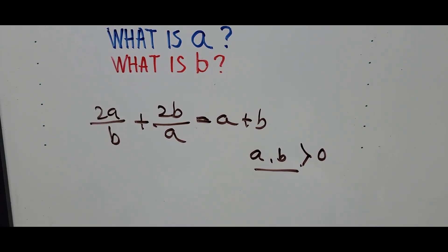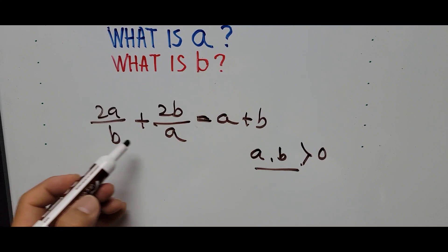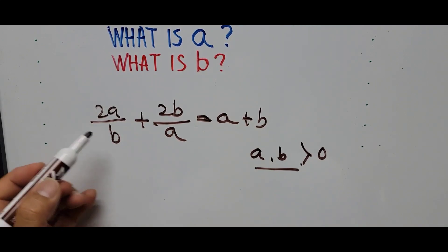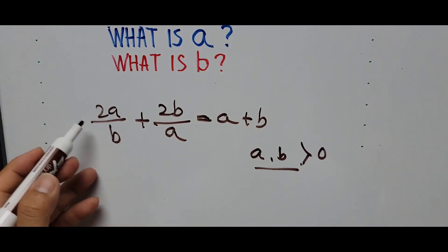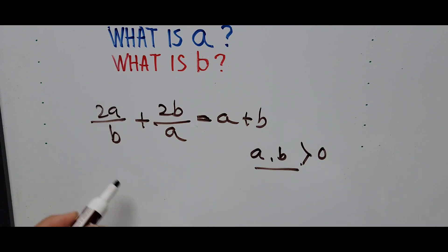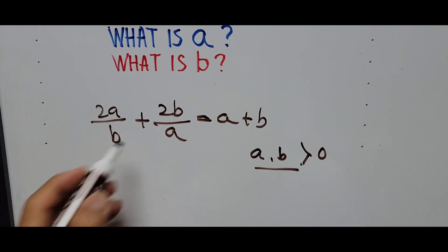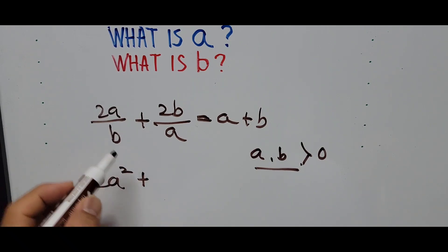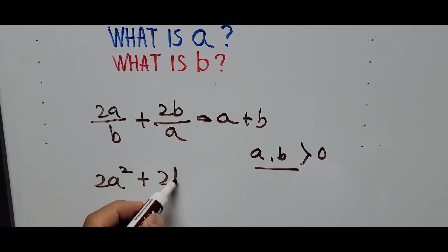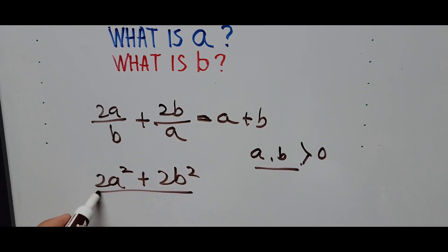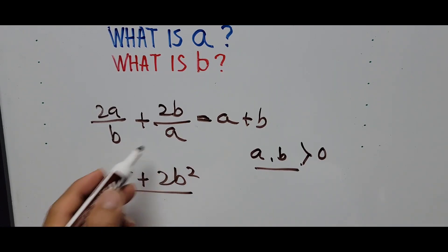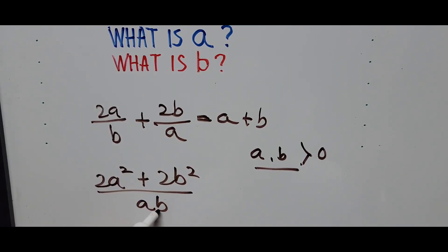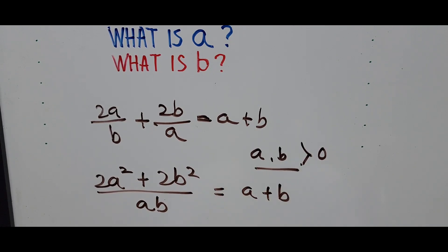Now we start focusing on the left side of the equation and we have to simplify by doing cross multiplication. So 2a times a gives 2a squared, plus b times 2b gives 2b squared, all divided by b times a, which is ab. So that equals a plus b.